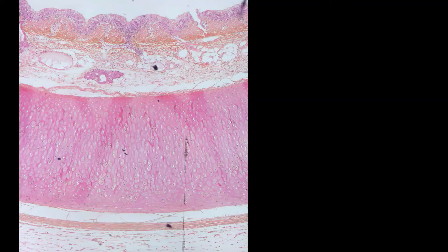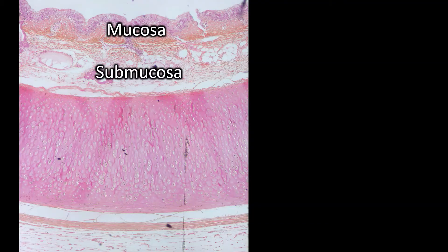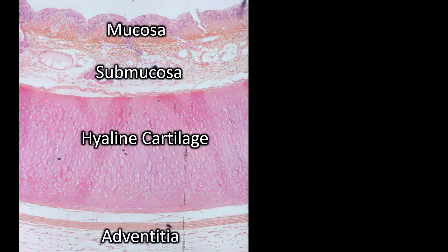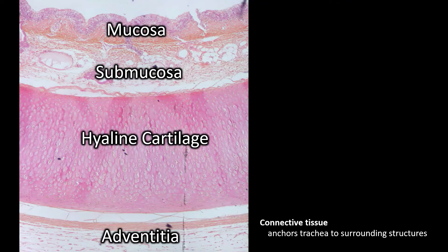The trachea has four different layers: the mucosa, submucosa, hyaline cartilage, and adventitia. The adventitia is the outermost layer — it's a type of connective tissue which is anchoring your trachea to surrounding structures. The hyaline cartilage is what keeps your airway open.